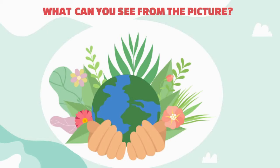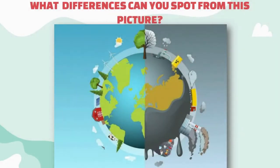Let's see another picture of our planet. How is this picture any different from the picture that you saw just now? What differences can you spot? As you can see, on one side, it is bright, green and beautiful, while on the other side, it is dull, grey and polluted. These are two sides of our Earth. Why do you think this happens? Who is responsible for the pollution and destruction? The answer is very simple. It's us, humans, isn't it?